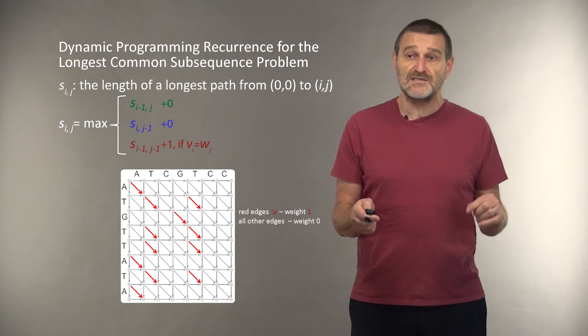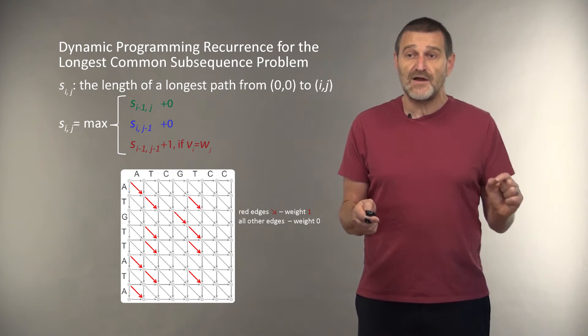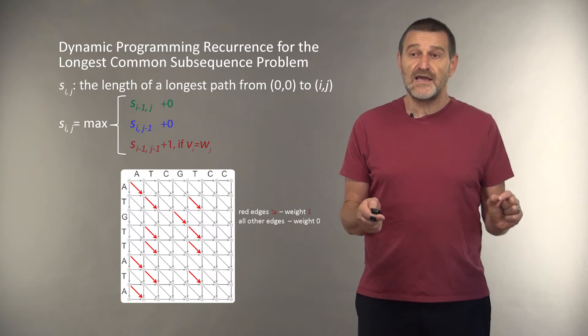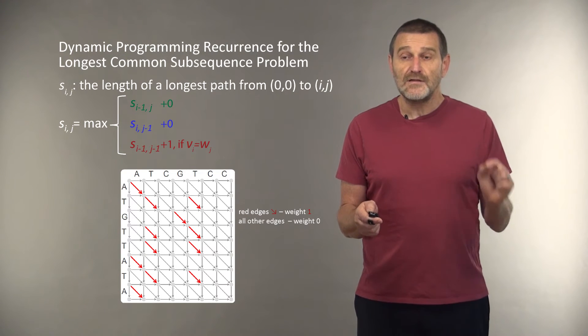We can drop zero from this equation, of course, or S_(i-1,j-1) plus 1 in the case where the i-th symbol in the first sequence matches the j-th symbol in the second sequence.